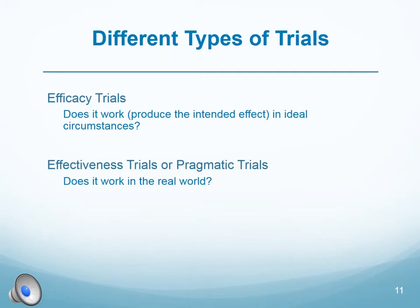To understand patient-centered outcomes research, it's important to understand that there are different kinds of clinical trials. Those that have a strict protocol — that is, a lot of very particular rules about who can be included and under what circumstances — are often efficacy trials. In those trials, researchers set the trial up to increase the chances of getting a positive result, the theory being that if the drug is not effective under ideal circumstances, there is no point in taking the trials any further into development. These efficacy trials may exclude older patients or patients with other health problems, and sometimes the exclusions are really extensive.